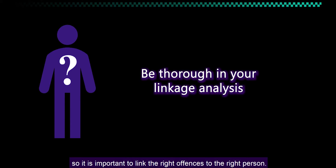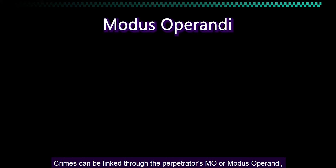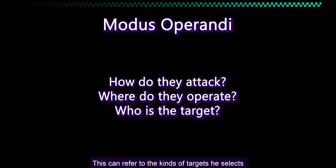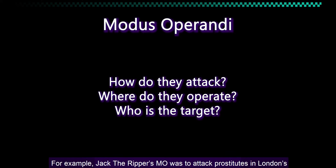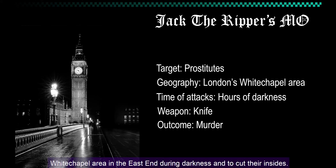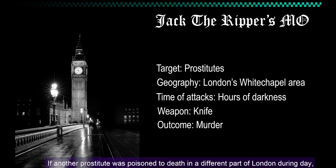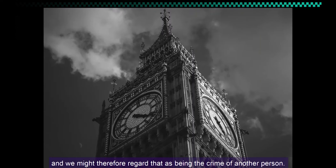Crimes can be linked through the perpetrator's MO, or modus operandi, which is how he carries out his crimes. This can refer to the kind of targets he selects and what he does to those targets. For example, Jack the Ripper's MO was to attack prostitutes in London's Whitechapel area in the East End during darkness and to cut their insides. If another prostitute was poisoned to death in a different part of London during the day, that would not be consistent with Jack's MO and we might therefore regard that as being the crime of another person.